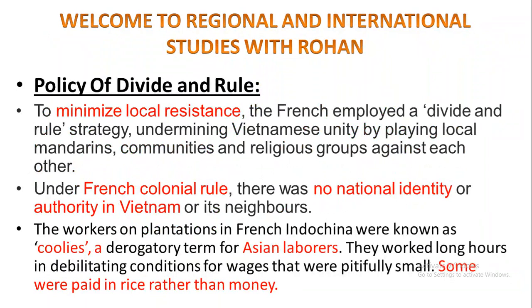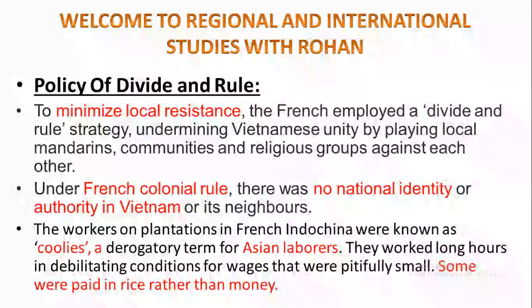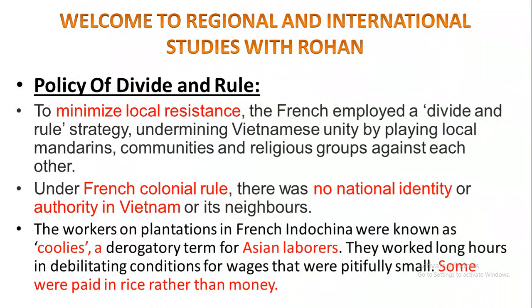To minimize local resistance, the French employed a divide and rule strategy, undermining Vietnamese national unity by playing local mandarins, communities, and religious groups against each other. Under French colonial rule, there was no national identity or authority in Vietnam or its neighbours. The workers on plantations in French Indochina were known as coolies, a derogatory term for Asian labourers. They worked long hours in debilitating conditions for wages that were pitifully small, and some were paid in rice rather than money.